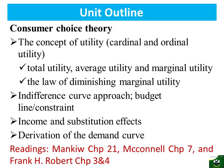In terms of the outline, we will first look at the concept of utility — that is, cardinal and ordinal — and then under that we will look at total utility, average utility, and marginal utility. Average utility is the satisfaction generated per unit of an item consumed. Marginal utility is the additional satisfaction an individual gets for consuming an additional unit of a given commodity.